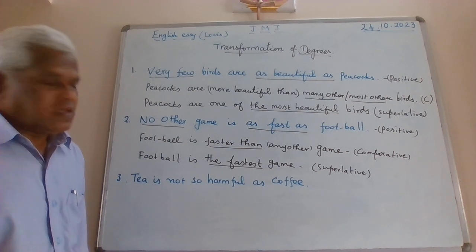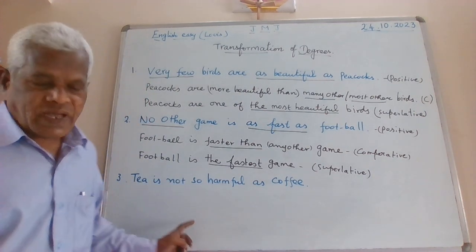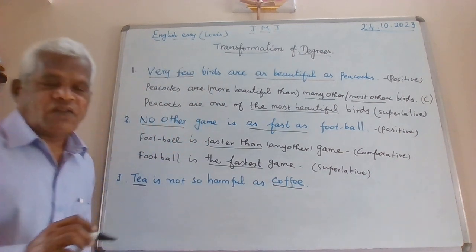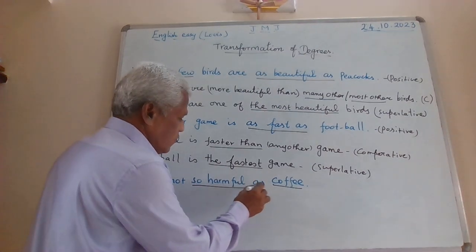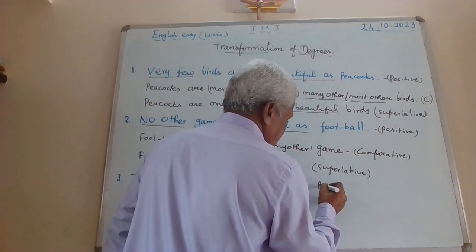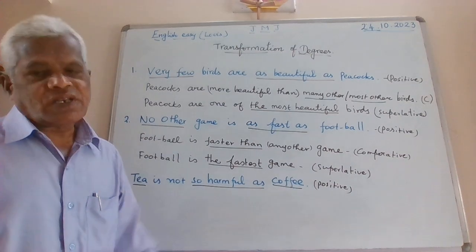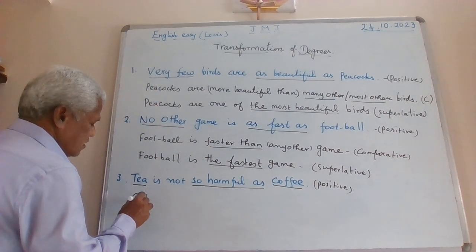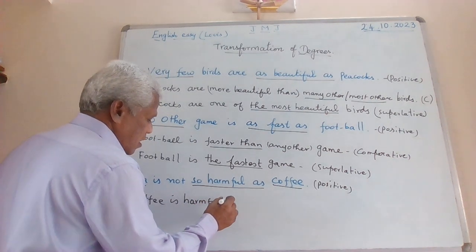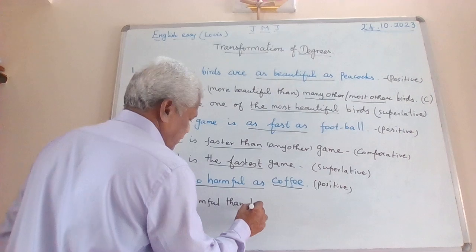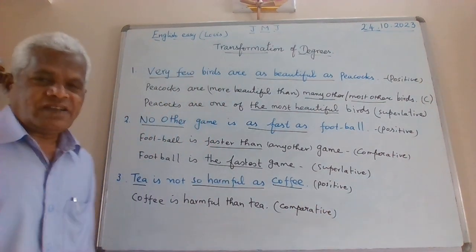The third example is: 'Tea is not so harmful as coffee.' Remember, we are comparing two equal drinks — tea and coffee. The degree here is positive, using 'not so harmful as' or 'as harmful as.' Since this compares two equal things, you cannot have a superlative for this type. The comparative degree is: 'Coffee is more harmful than tea.' That is your comparative.